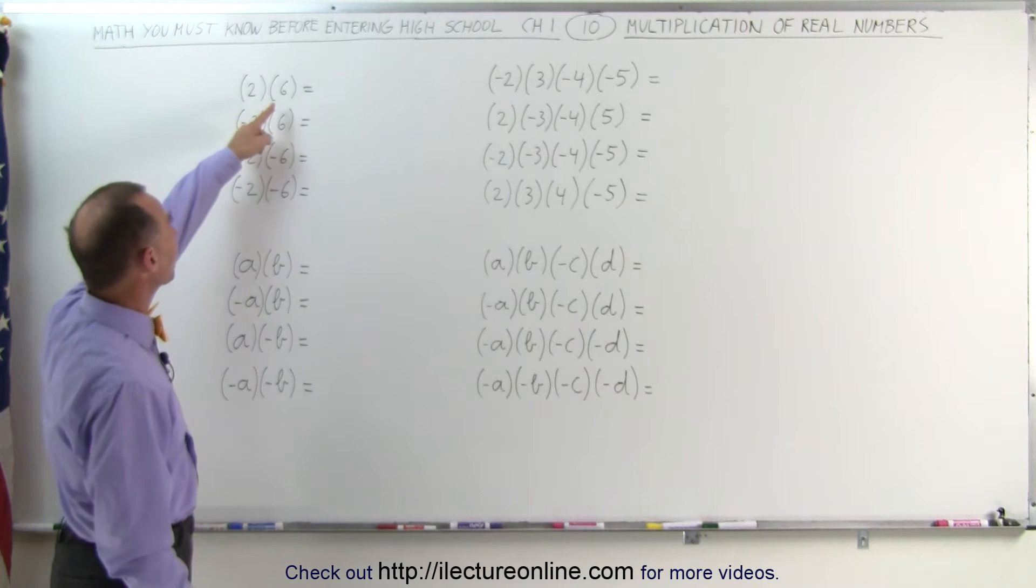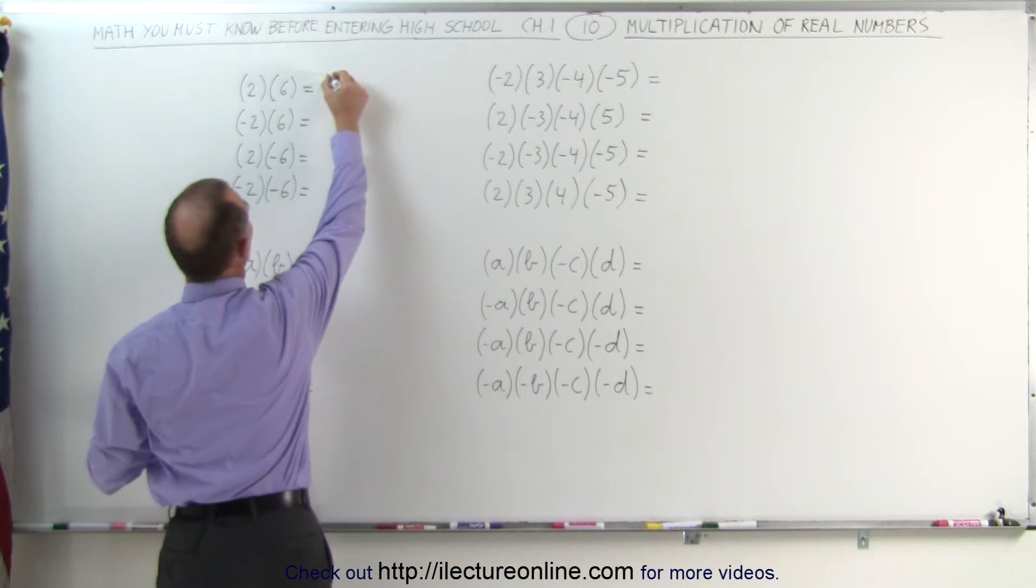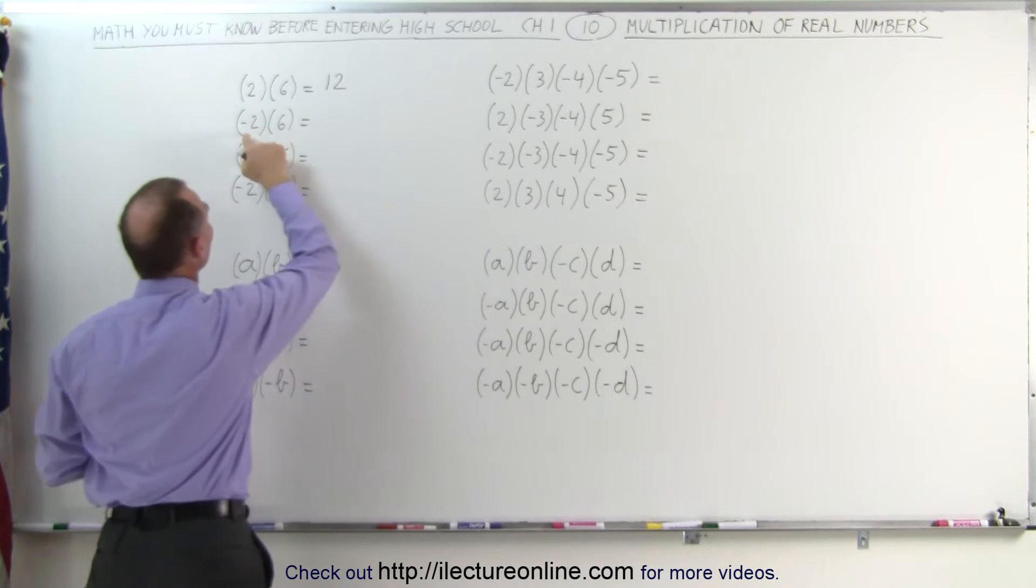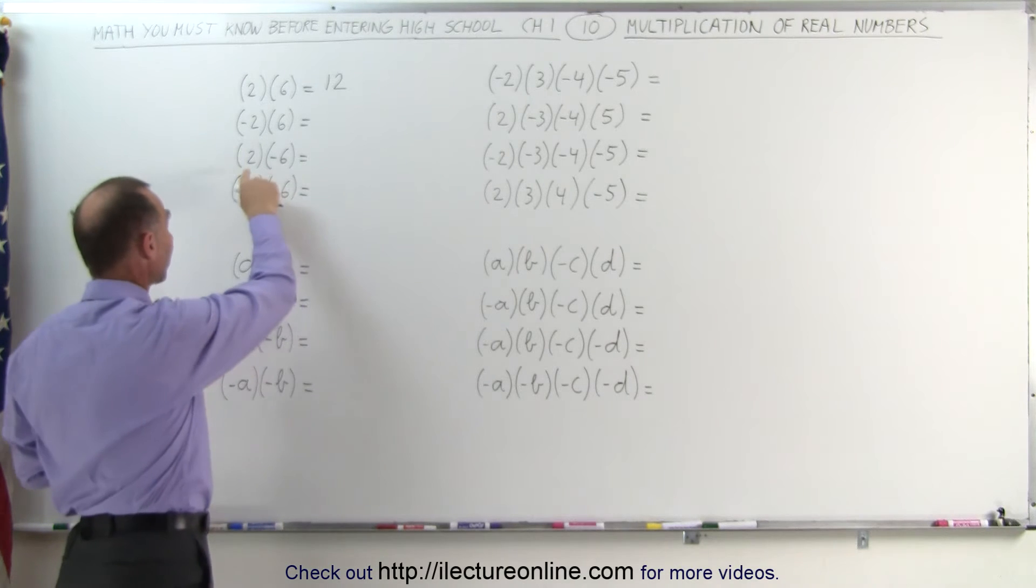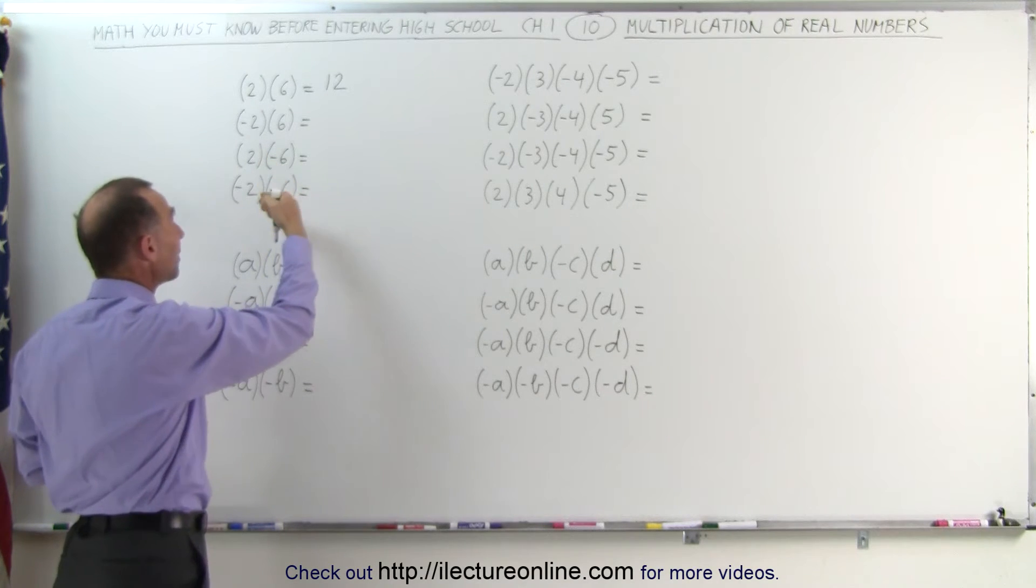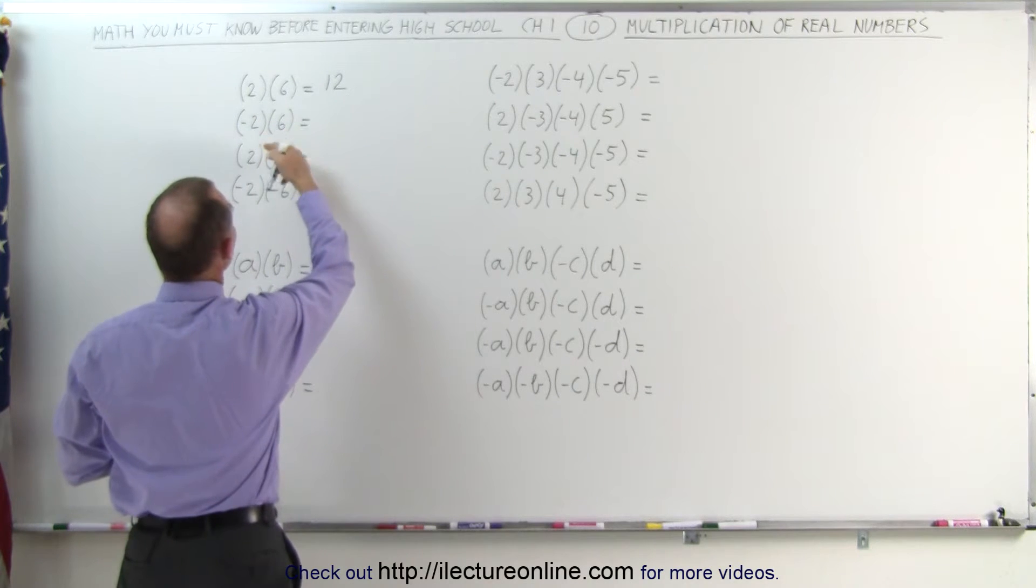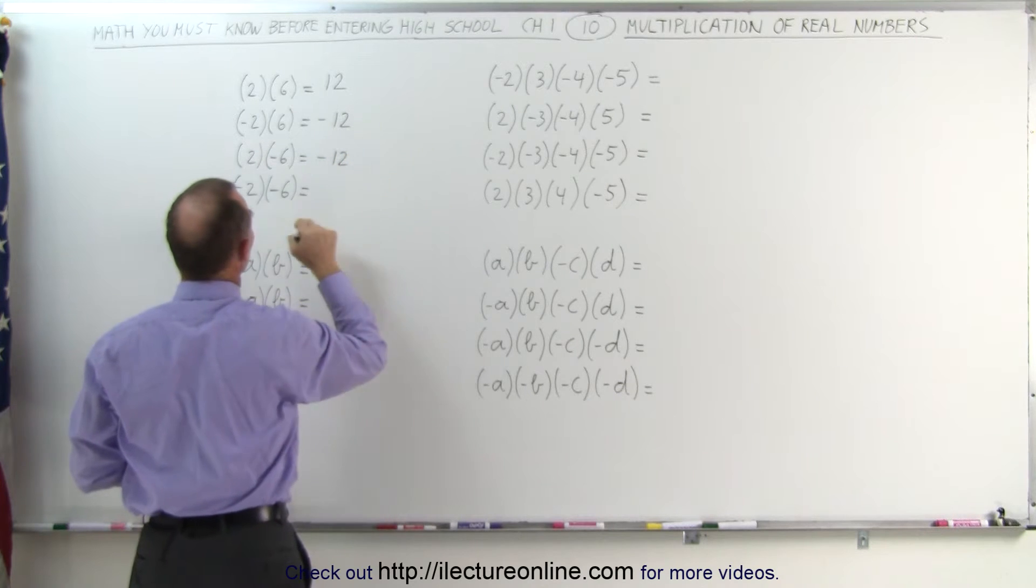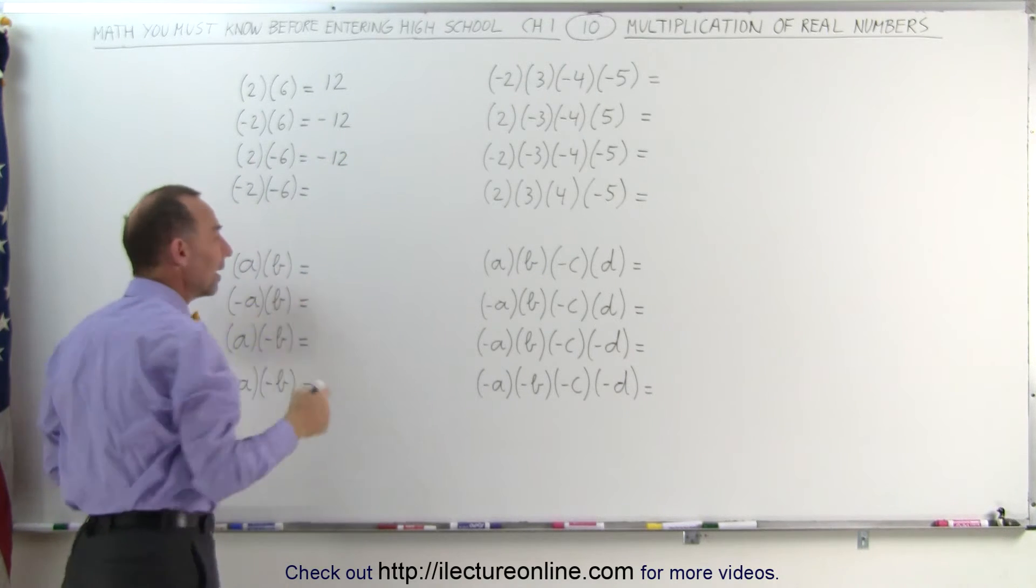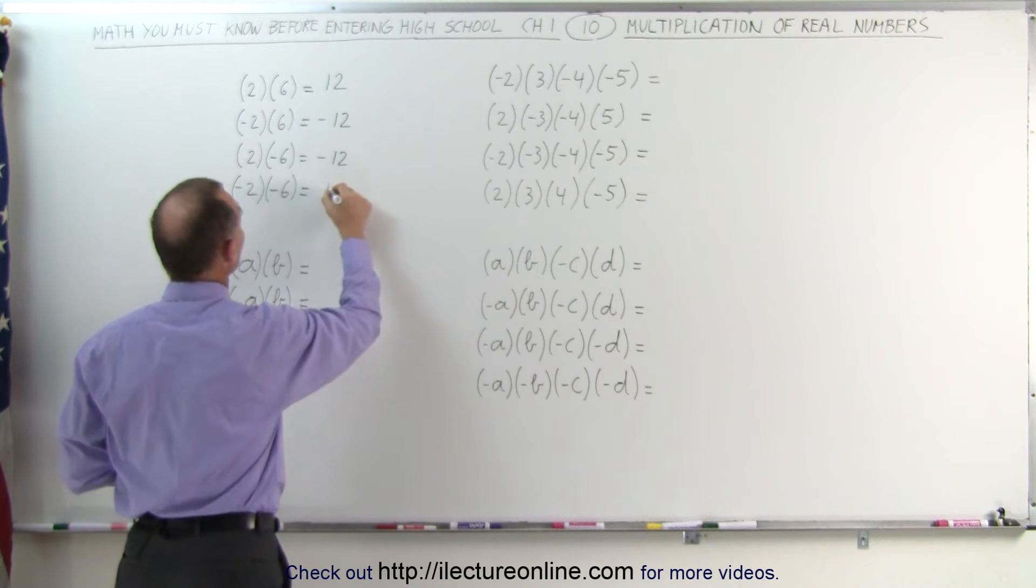For example, when we multiply 2 times 6, if they're both positive, the answer will be positive 12. But if one of them is negative, a negative 2 times a positive 6, or a positive 2 times a negative 6, that will make the answer negative. If one of the signs is negative, then the answer is negative. So this will be minus 12, and this will be minus 12. But if both are negative, a negative 2 times a negative 6, that gives you a positive 12.